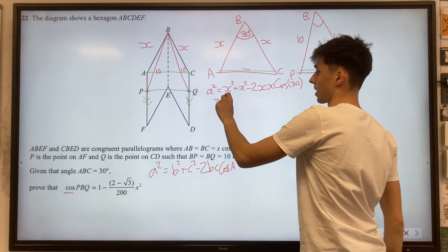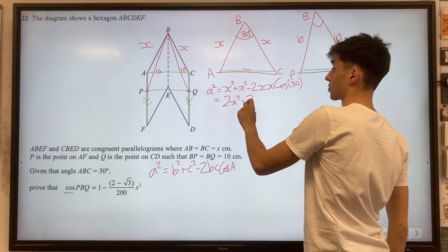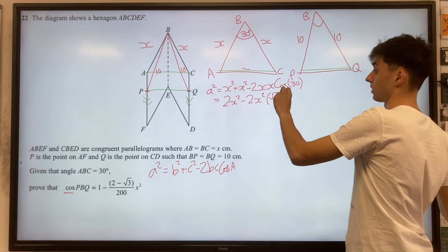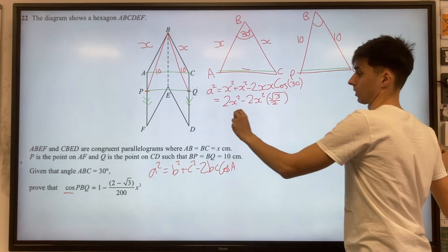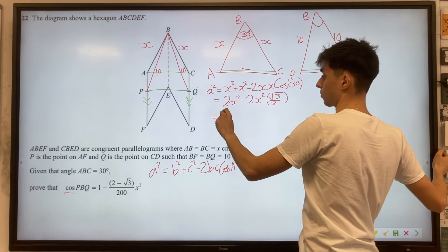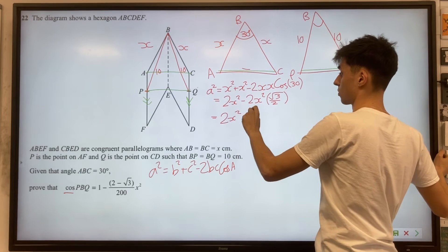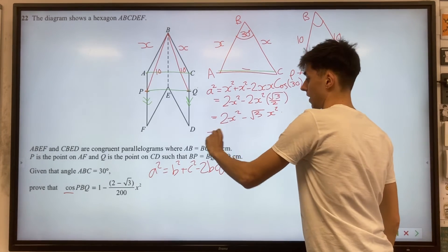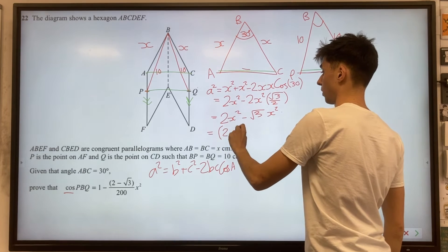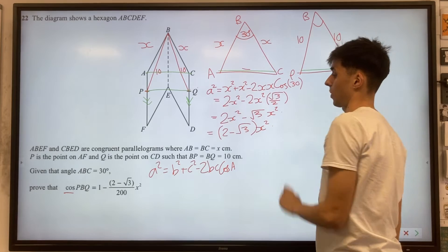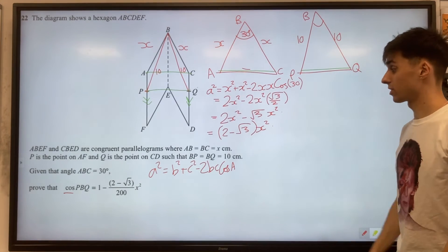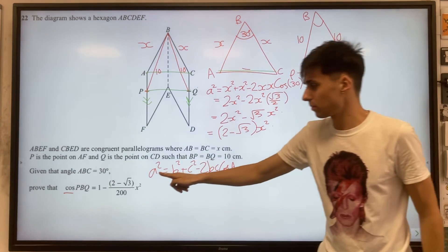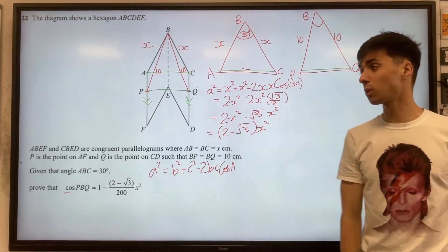So sorting this out, we're going to have 2X squared minus 2X squared. Cosine 30 is an exact trig value that we know. That's root 3 over 2. So a little bit more simplifying. We've got 2X squared minus root 3X squared. And actually, let's take out this factor of X squared as well. So we've got 2 minus root 3 X squared. This looks really good for us, actually, because finding the length of this side, 2 minus root 3 X squared, it's starting to look a bit like our answer already. So we think we're on the right track.